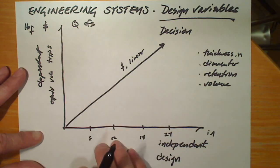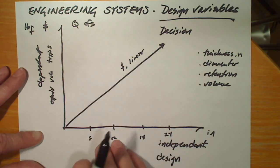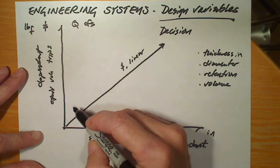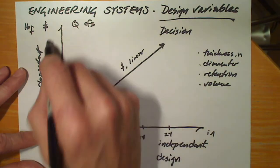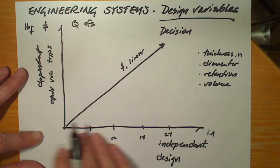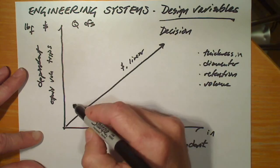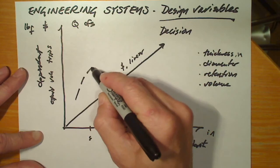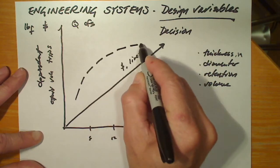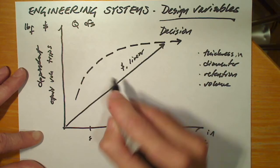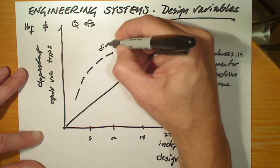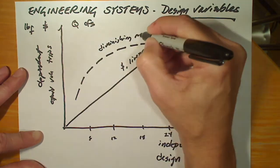But we're just going to make some assumption about the relationship between the equivalent, the lifetime, the equivalent vehicle trips and the thickness of the pavement. And we'll assume that it looks something like this, which exhibits diminishing returns.